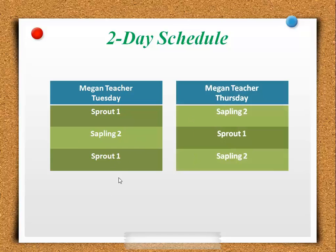The last thing to mention is that once you label a class type A or type B, it never changes throughout the week. So for example, sprout one here is labeled type B, but you teach them second on Thursday — it doesn't change anything because you labeled them type B on Tuesday.